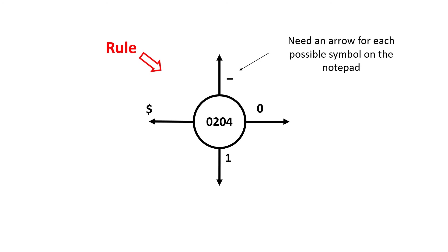This number is the rule number and in this case it defines what rule 204 is. The circle has an arrow pointing out of it for every possible symbol on the tape. In this case, underscore, zero, one and dollar.